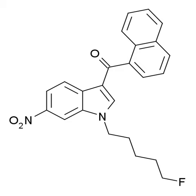AM1235 metabolism differs only slightly from that of JWH018. AM1235 N-dealkylation produces fluoropentane instead of pentane or plain alkanes in general. It has been speculated that the fluoropentane might function as an alkylating agent or is further metabolized into toxic fluoroacetic acid.